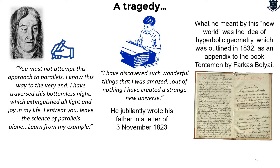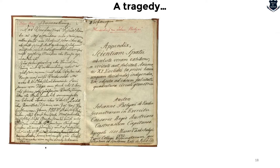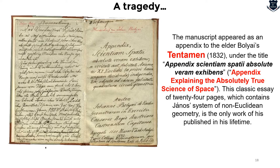What he meant by this new world was the idea of hyperbolic geometry, outlined in an appendix to the book called Tentamen, written by Farkas Bolyai. The appendix — titled Appendix Scientiam Spatii Absolute Veram Exhibens, meaning 'Appendix Explaining the Absolute True Science of Space' — is a classic essay of 24 pages containing János' system of non-Euclidean geometry, and is the only work of his published during his lifetime.